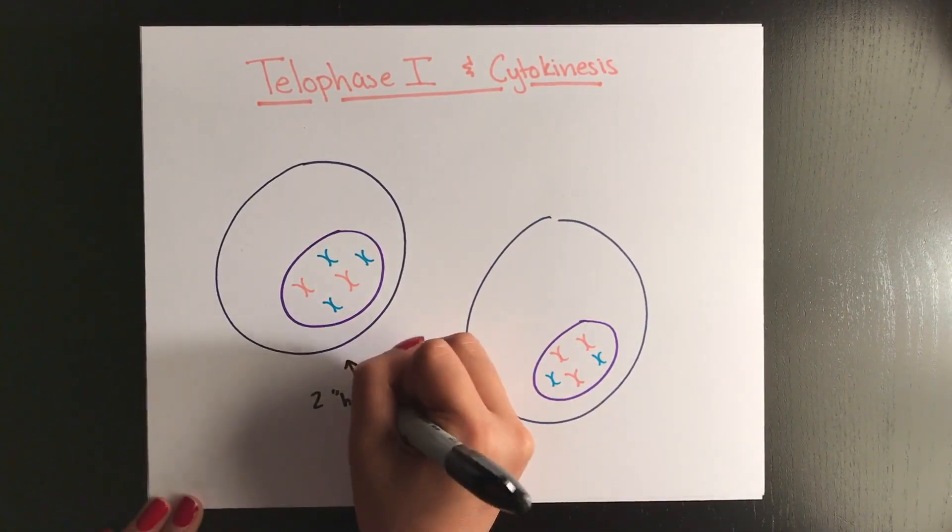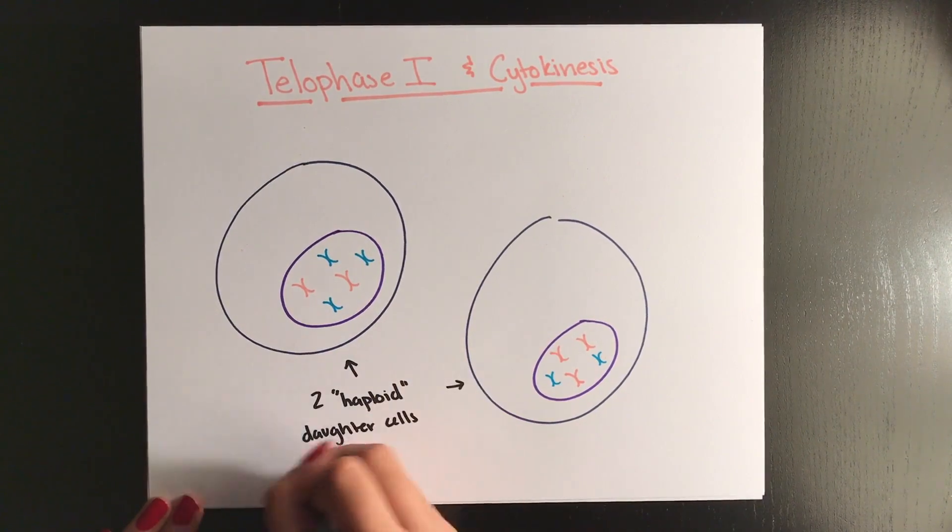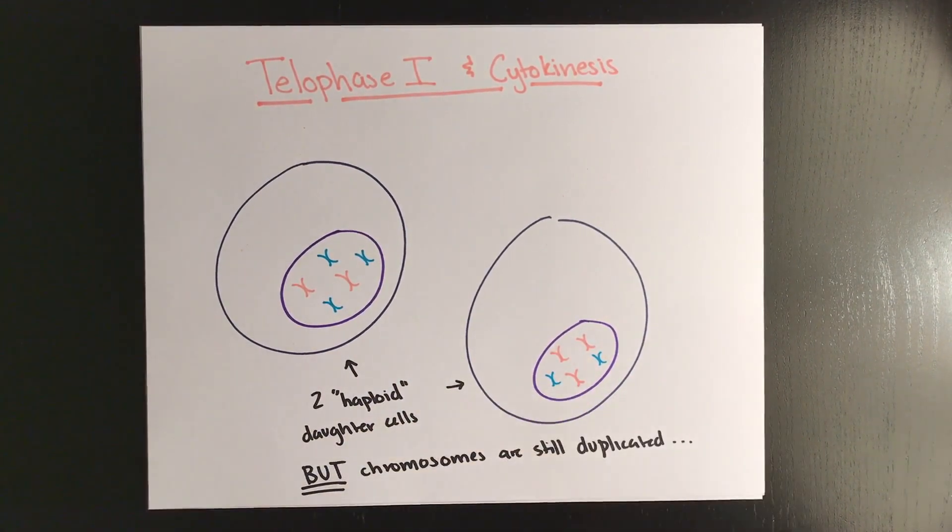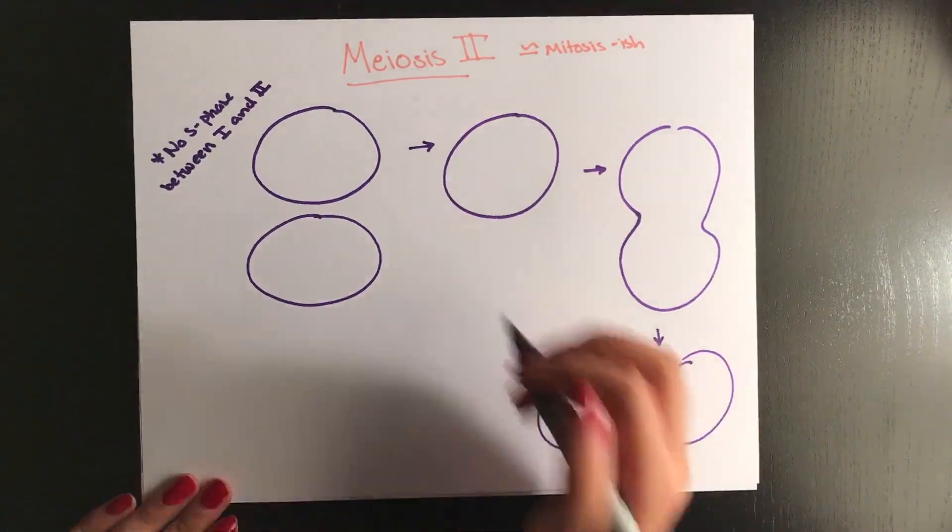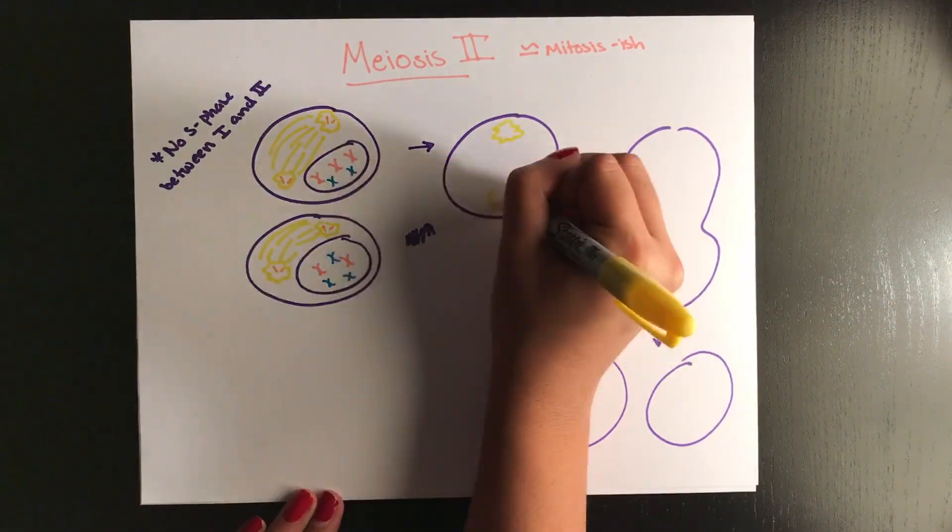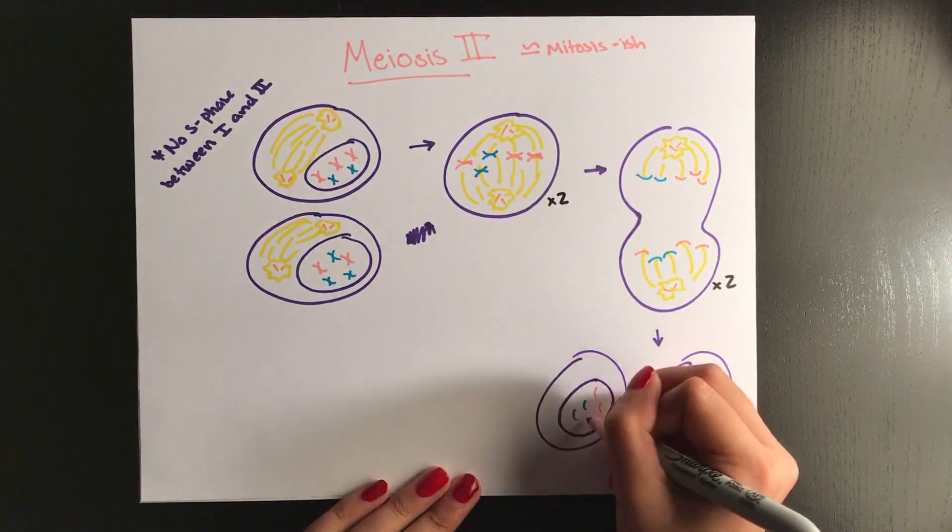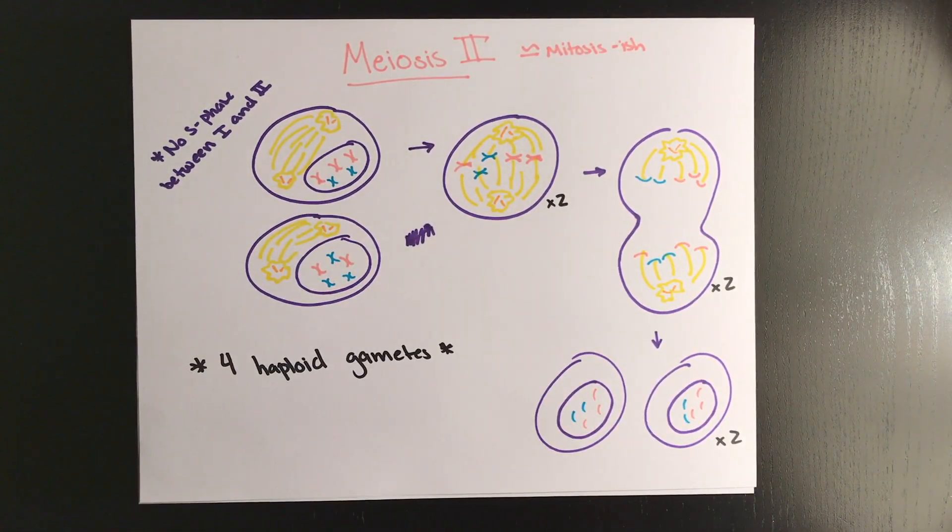But the problem is, is that even though you have 23, they're still duplicated. You have two sister chromatids per chromosome, which is why we have meiosis 2, which is essentially identical to mitosis. However, because we have half the number of chromosomes, we will end up with four haploid cells.